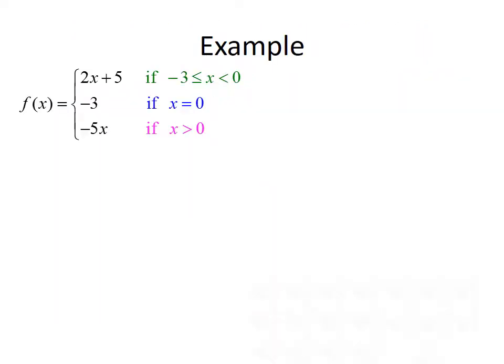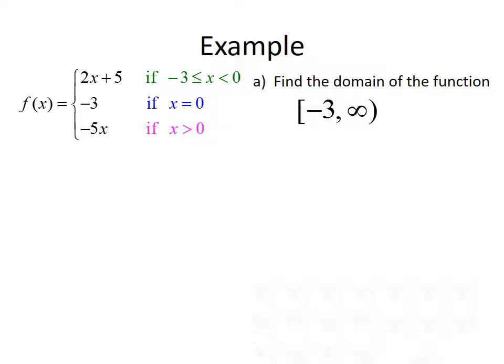Let's look at another example. Consider the piecewise defined function f of x equals 2x plus 5 if negative 3 is less than or equal to x is less than 0; negative 3 if x equals 0; and negative 5x if x is greater than 0. First, find the domain of the function. Since the lowest value is negative 3 included, and there is no upper limit, our domain will be negative 3 comma infinity.